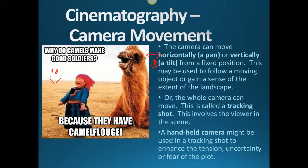These movements may be used to follow a moving object. For instance, we get a pan at the very beginning of Rear Window where the camera pans out of Jeff's window across the apartment complex and then back into his room. And a tilt is used when Lisa decides to climb into Thorwald's apartment — used to move with an object or to gain a sense of the extent of the landscape.